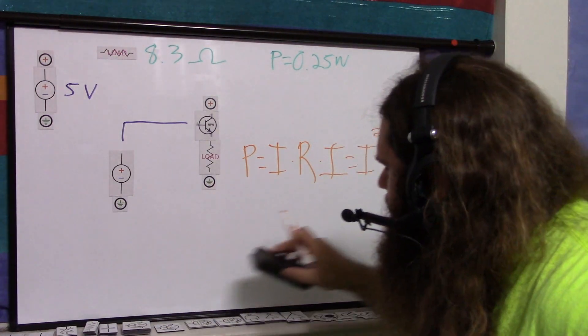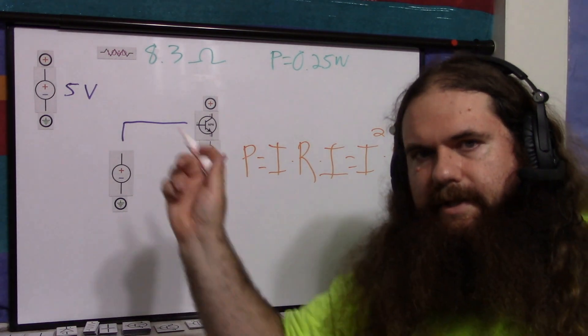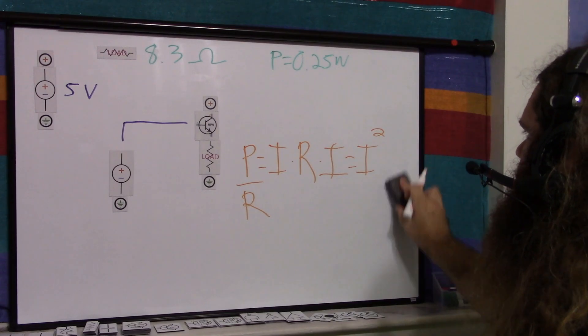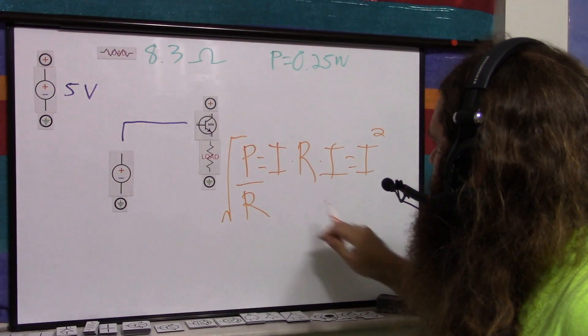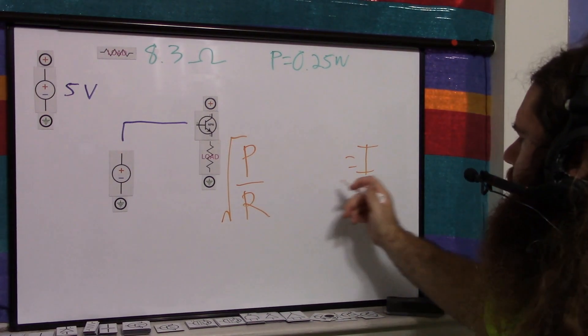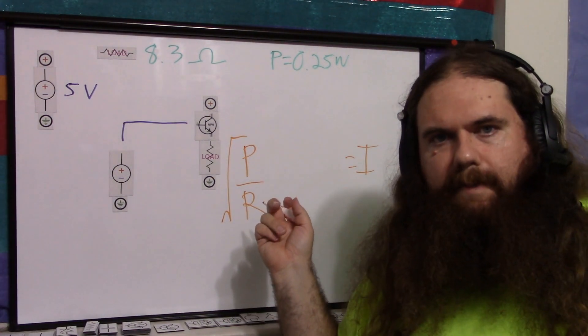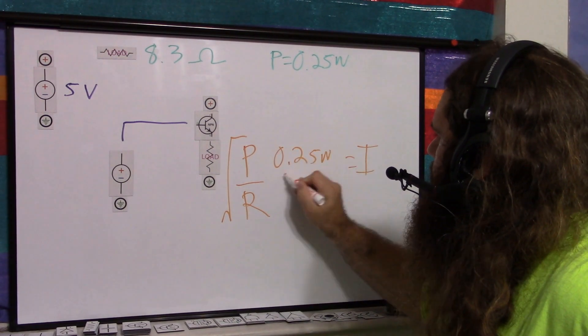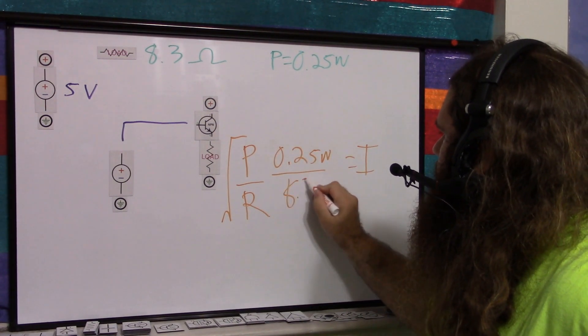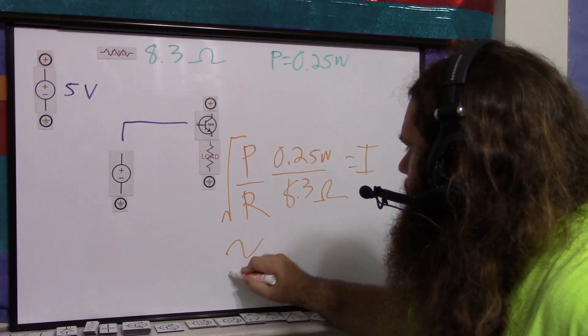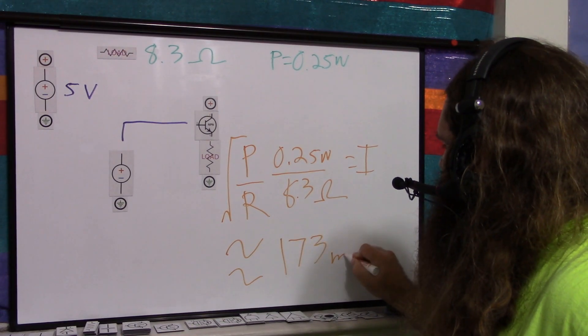But we need current. So we're going to move everything that's not current over. Power divided by resistance. And then we just take the square root. Square root gets rid of that. And we have, let's give it to that. We have current equals the square root of the quotient of power and resistance. So that's 0.25 watts divided by 8.3 ohms. And then you take the square root. And for me, that comes out to approximately 173 milliamps.